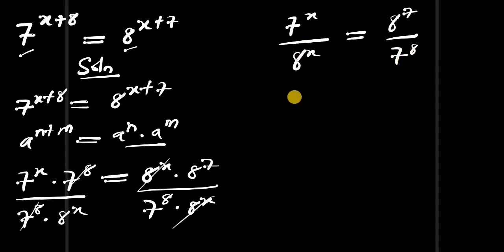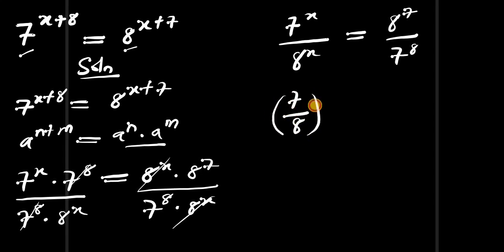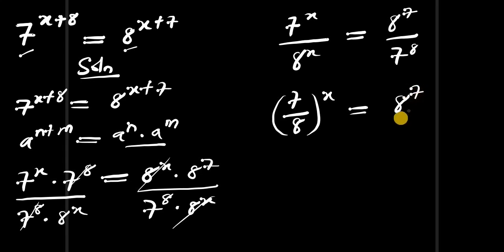Now this can be written as 7 divided by 8, all raised to the power of x, equals 8 to the power of 7 divided by 7 to the power of 8.